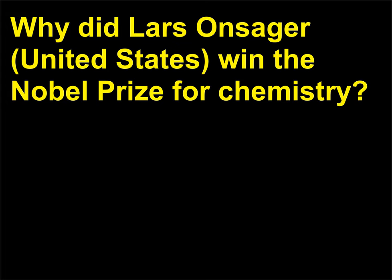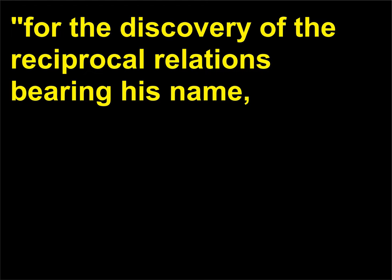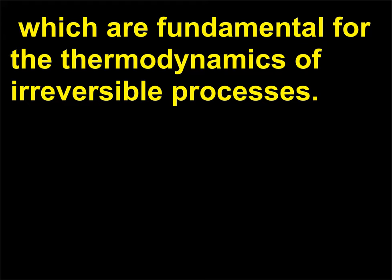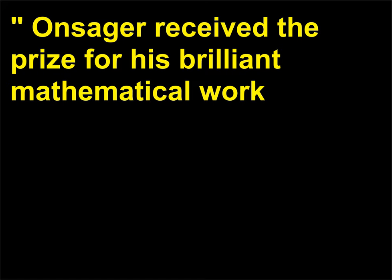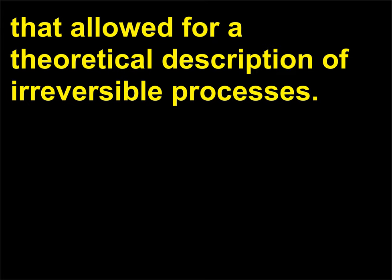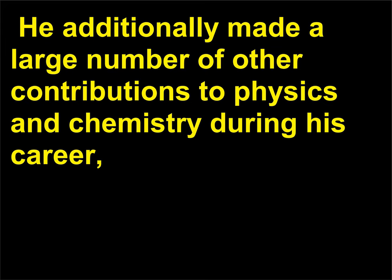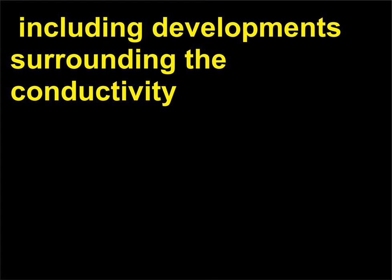For the discovery of the reciprocal relations bearing his name, which are fundamental for the thermodynamics of irreversible processes. Onsager received the prize for his brilliant mathematical work that allowed for a theoretical description of irreversible processes. He additionally made a large number of other contributions to physics and chemistry during his career, including developments surrounding the conductivity of solutions and flow of electrolytes, and a solution to the Ising model.